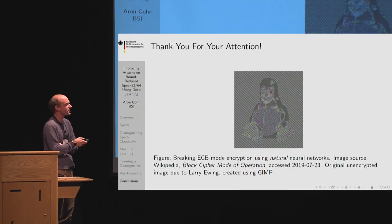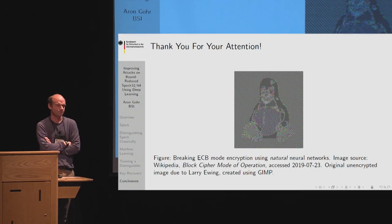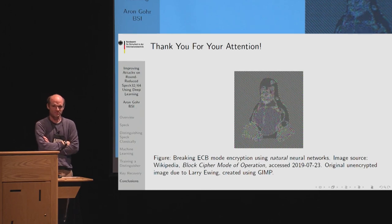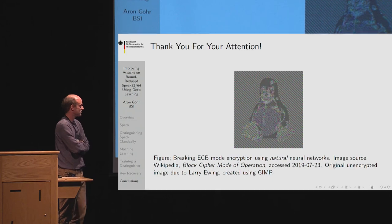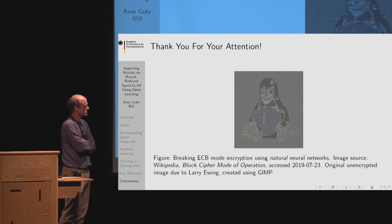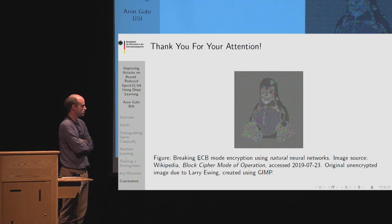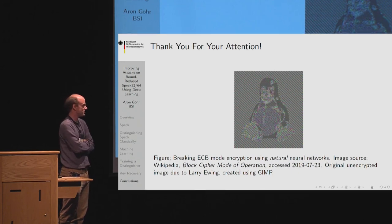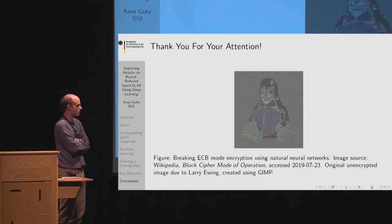Q: An immediate question — does this apply also to SIMON and other block ciphers? A: I expect these techniques will apply to other block ciphers. For Markov ciphers you shouldn't obviously be able to get a distinguisher better than the difference distribution table, but there is nothing SPECK-specific here. I tried it on one cipher — SPECK — and it worked. I would definitely expect it to work for other ciphers.